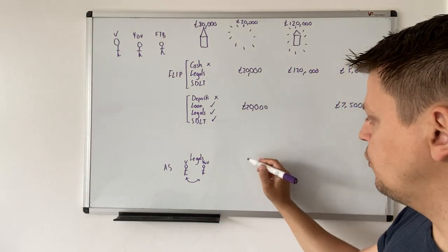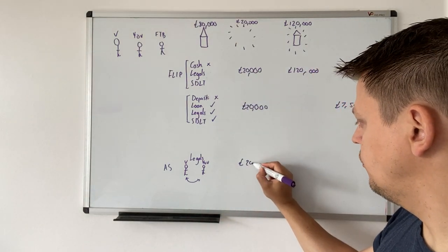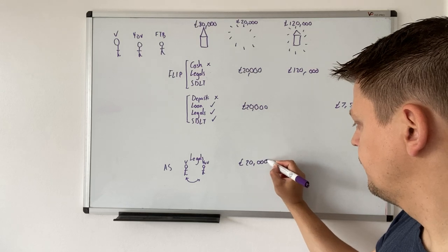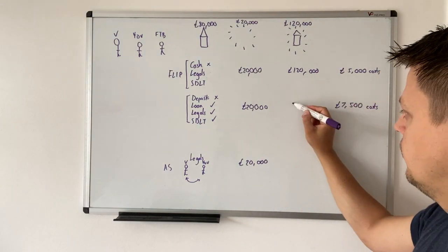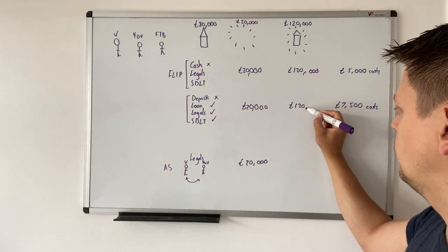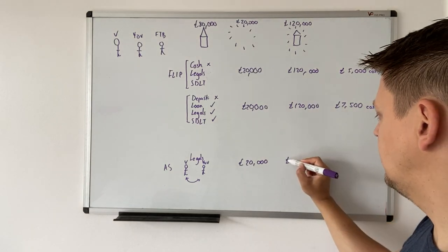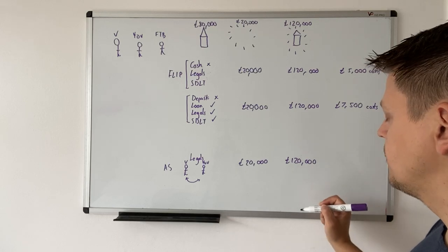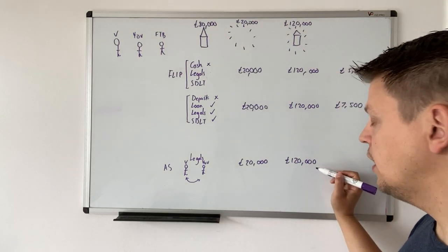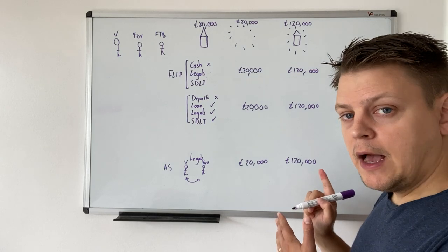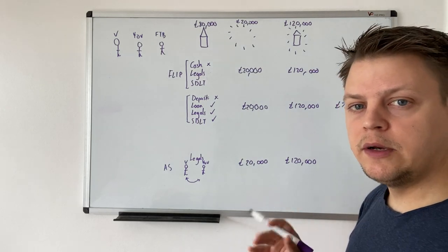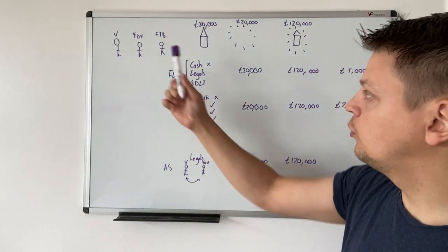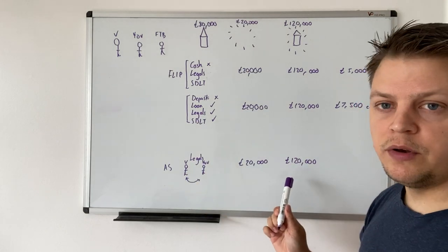So now you go in, you spend your £20,000 doing the refurbishment. And now you have the house looking beautiful at £120,000, as in the other two examples. And now you work with a local estate agent and you set it on the open market to a first-time buyer and they pay £120,000.